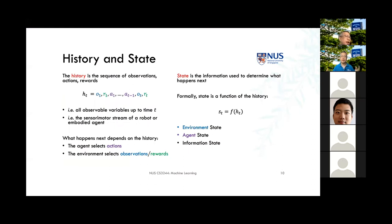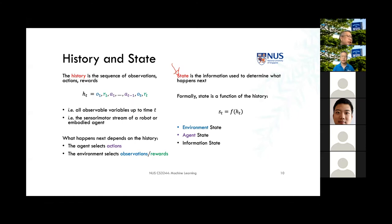We model RL as a history — a sequence of observations, a sequence of actions, and the rewards coupled with observations at the next time step. More importantly, we use the abstraction of a state: some way of encoding all the information we need about the environment or the agent. We're abstracting away from the actual physical environment and representing it in some knowledge representation form — a vector of values that denotes information about what we want to do or where we are.